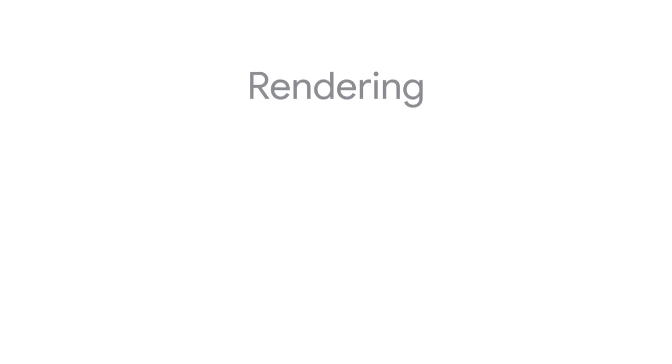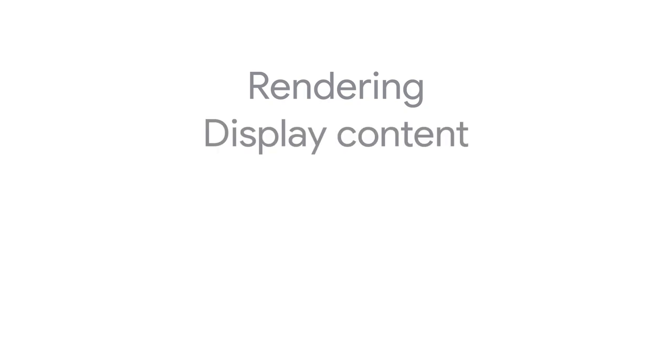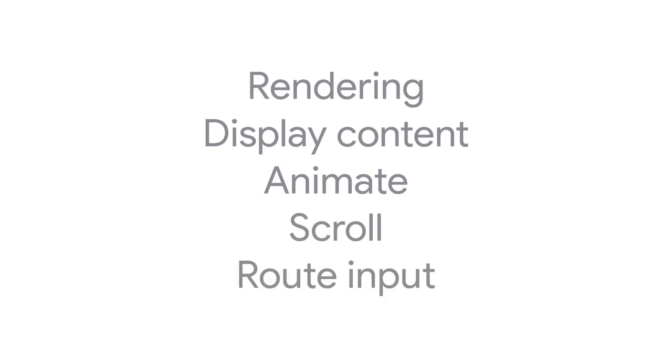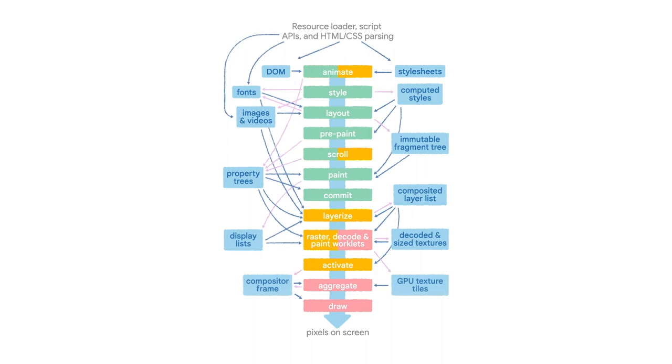JavaScript also needs to be parsed and then executed. Once all that's done, Blink can begin the work of laying out and displaying web pages — this is called rendering. At a high level, rendering has several tasks: a rendering engine displays web page content on your screen, animates visual effects, enables scrolling, and routes input from users to scripts and underlying subsystems. As you can see, there are multiple stages in the pipeline of rendering tasks. Some stages can be skipped if they're not needed — for example, scrolling can skip layout, pre-paint, and paint.